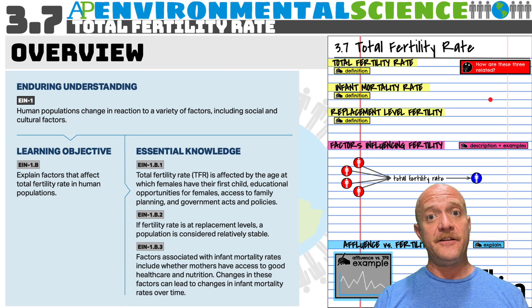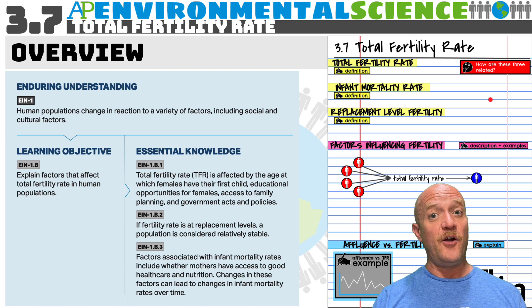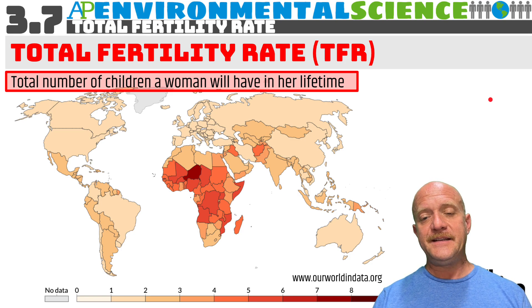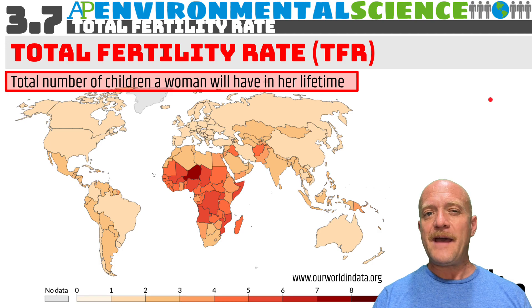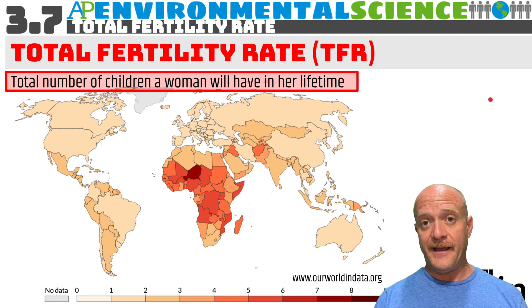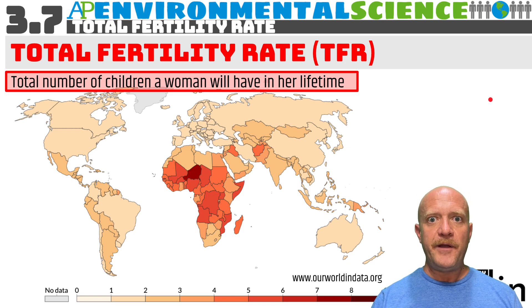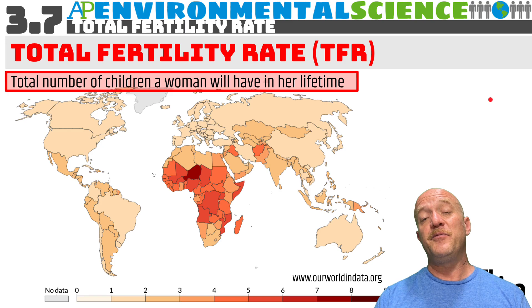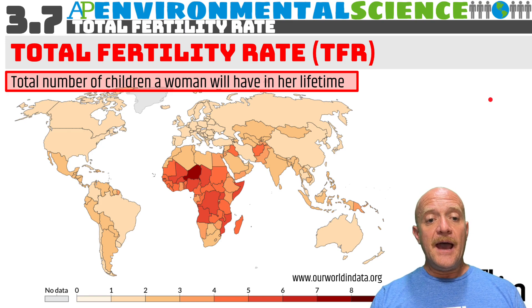This is a video for section 3.7, Total Fertility Rate. Go ahead and check out the overview and set up your guided notes. Globally, the total fertility rate is just around 2.3 children. This is the total number of children that the average woman will have in her lifetime. Obviously you cannot have 0.3 children, but when you factor in all of the reproductive females on the planet, this is the average.